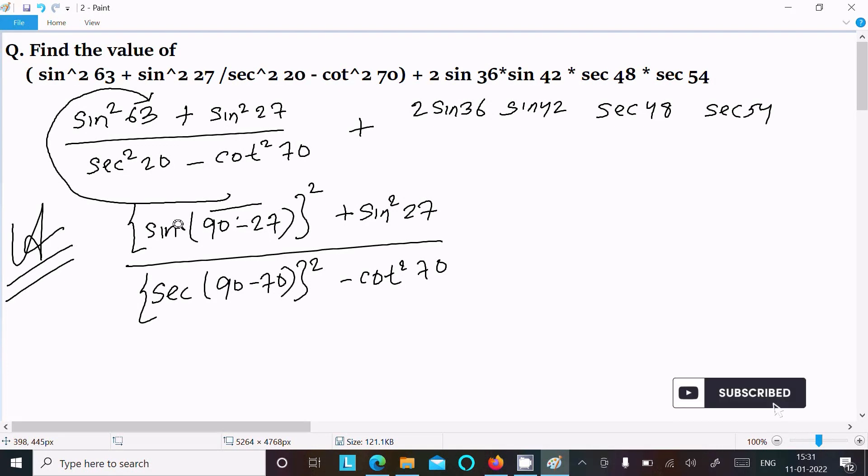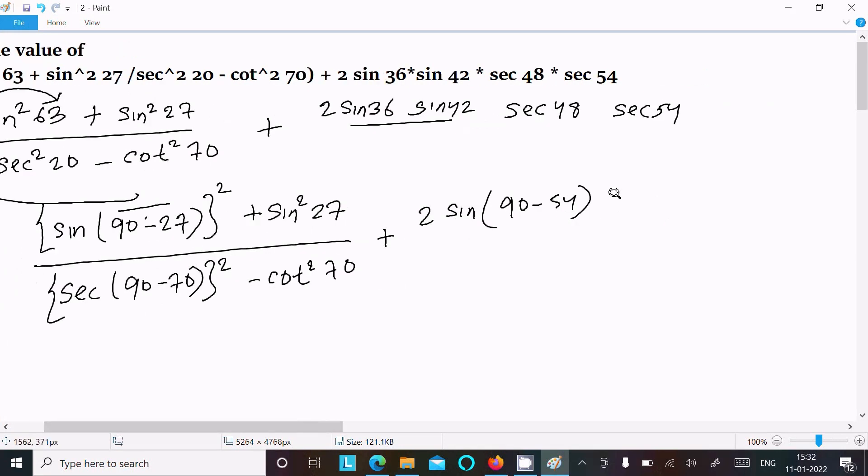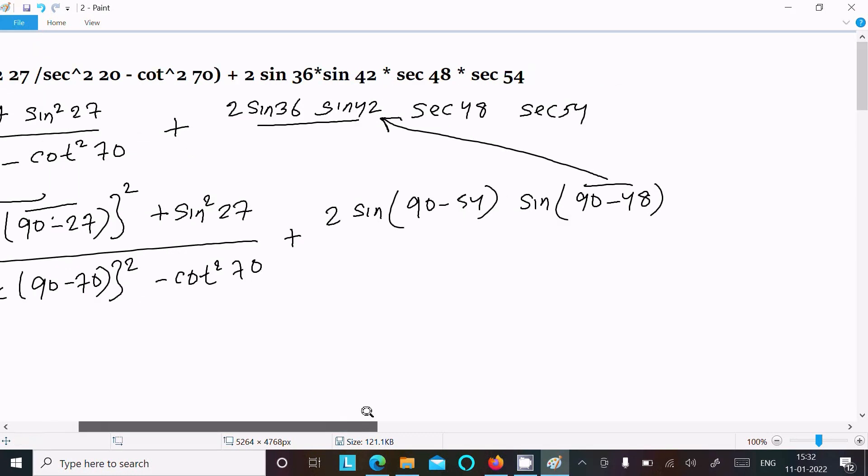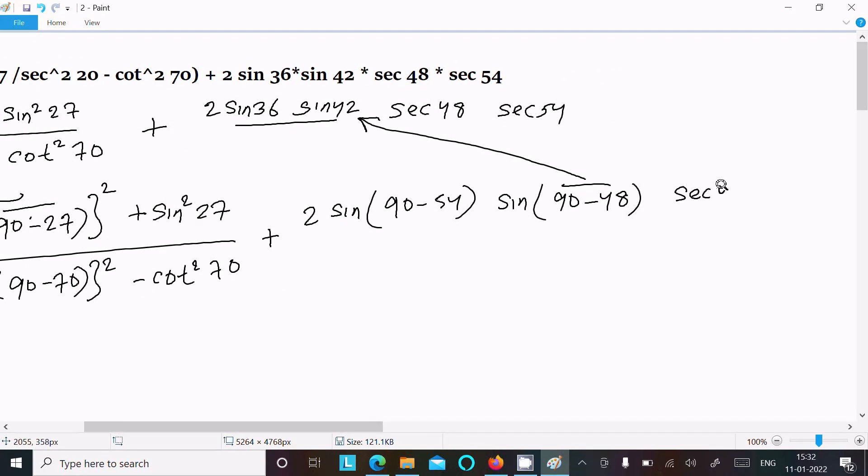So this we can write now. Thereafter, to sin, this is going to change, these two we need to change. So here sin 36 we can write 90 minus 54, and the next is sin 90 minus 48. Now thereafter we can write sec 48 sec 54.